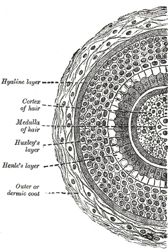Many mammals have fur and other hairs that serve different functions. Hair provides thermal regulation and camouflage for many animals; for others it provides signals to other animals such as warnings, mating, or other communicative displays; and for some animals hair provides defensive functions and, rarely, even offensive protection. Hair also has a sensory function, extending the sense of touch beyond the surface of the skin. Guard hairs give warnings that may trigger a recoiling reaction.